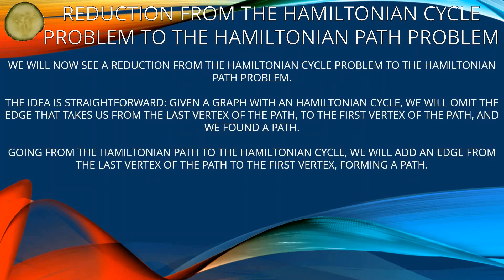We will now see a reduction from the Hamiltonian cycle problem to the Hamiltonian path problem. The idea is straightforward: given a graph with a Hamiltonian cycle, we omit the edge that takes us from the last vertex of the path to the first vertex, and we find the Hamiltonian path.